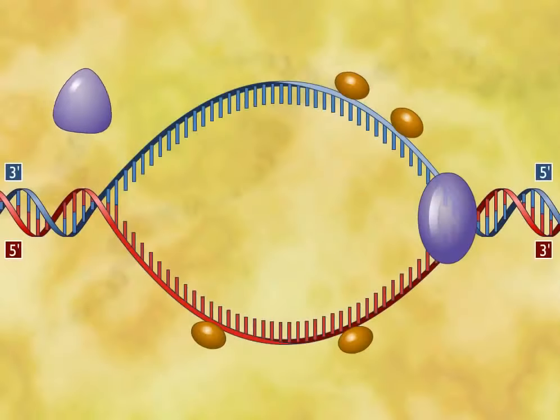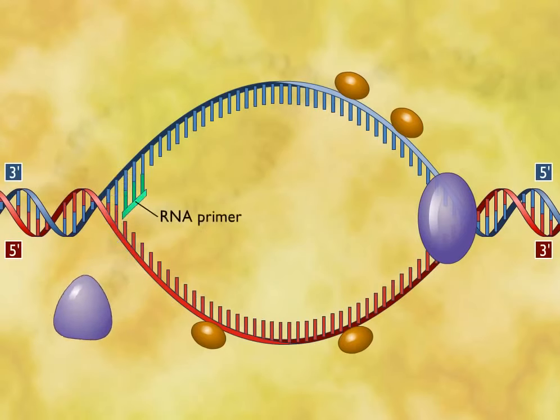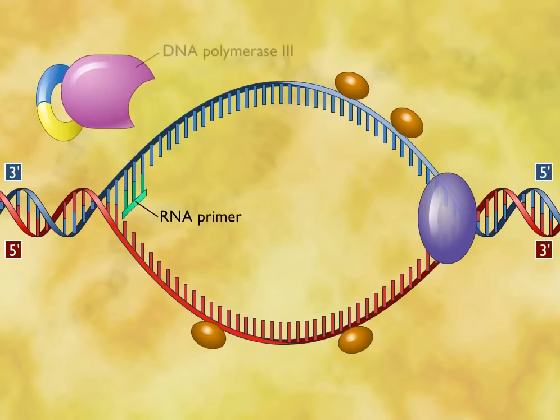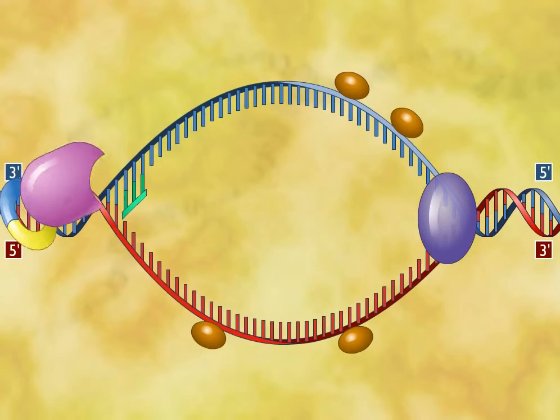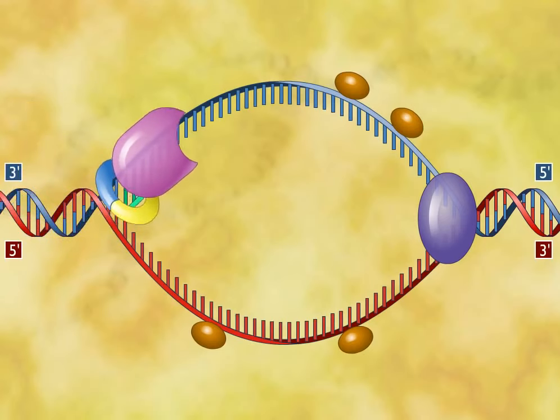Therefore, an RNA polymerase called a primase constructs an RNA primer, a sequence of about 10 nucleotides complementary to the parent DNA. DNA polymerase 3 can then add deoxyribonucleotides to synthesize the new complementary strand of DNA.